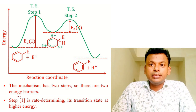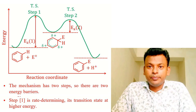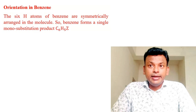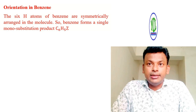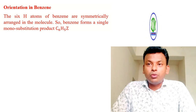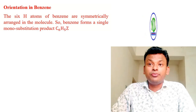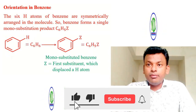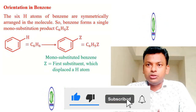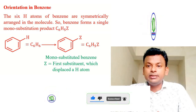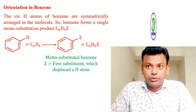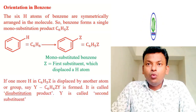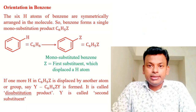Step one is the rate-determining step — its transition state is at higher energy. Regarding orientation in benzene: the six hydrogens of benzene are symmetrically arranged in the molecule, so benzene forms a single monosubstitution product, C₆H₅Z, where Z is the first substituent displacing a hydrogen.